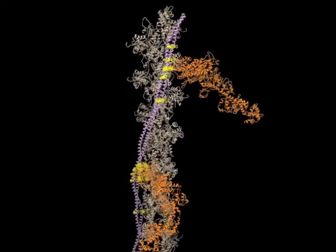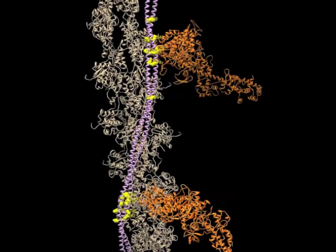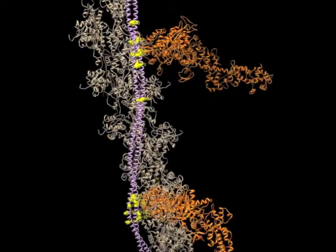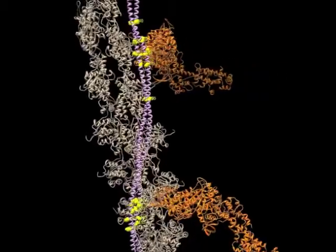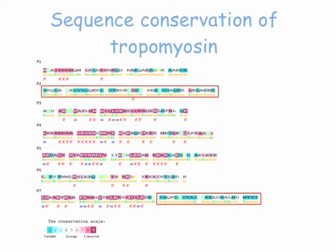We also have mapped cardiomyopathy mutants onto this structure. These residues are shown in yellow. Note that they're clustered in period five and period two of tropomyosin. These regions interact with the troponin core and actin, respectively.